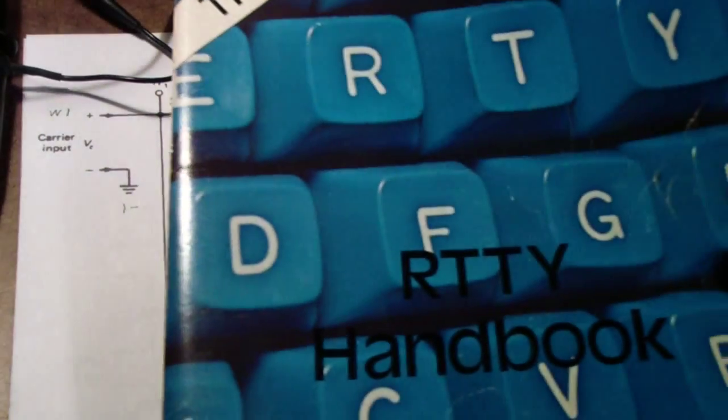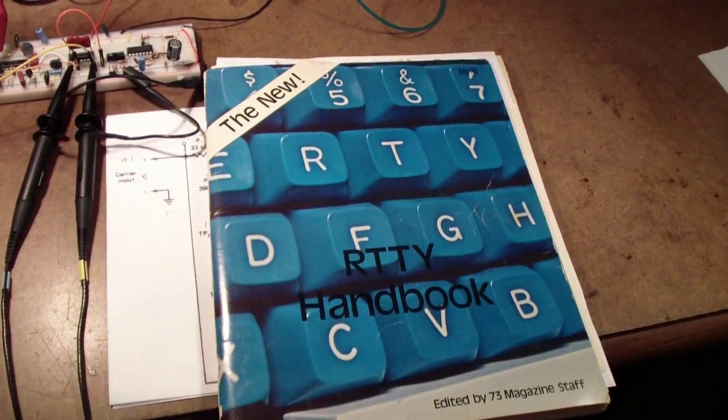The 565 has been around a very long time. This is a book that I bought in 1977 and I built one of the circuits in this book, which you see down here. It is a radio teletype demodulator that uses an NE565 phase-locked loop. Here is the schematic that I drew.